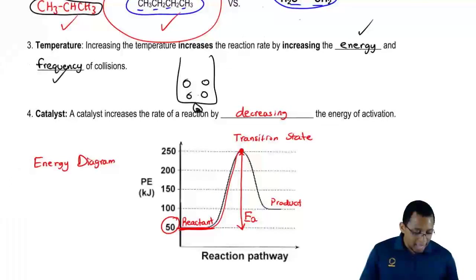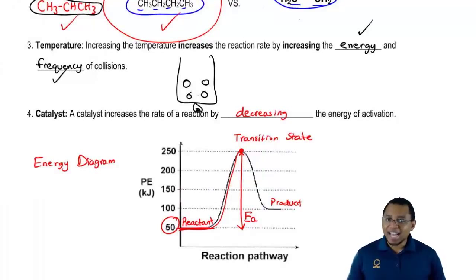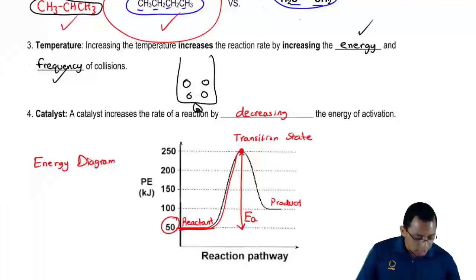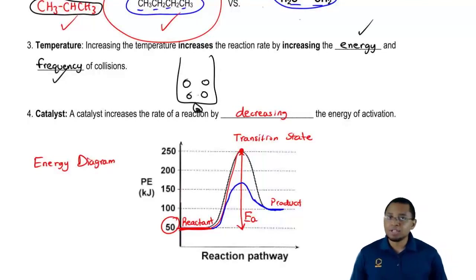The way a catalyst works is it changes the reaction pathway. It actually makes the hill shorter. You still end with the same energy for your products, but you don't have to travel up as high to get to the transition state. It lowers the energy of the transition state so you get to the top of the hill faster, and that way you can slide down the hill faster to become a product. That's how a catalyst works.